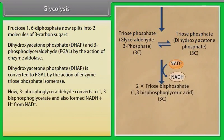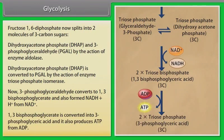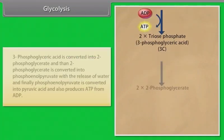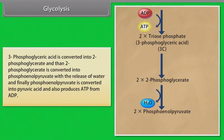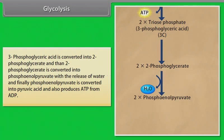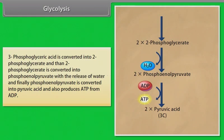3-phosphoglyceraldehyde converts to 1,3-bisphosphoglycerate and also forms NADH+H⁺ from NAD⁺. 1,3-bisphosphoglycerate is converted into 3-phosphoglyceric acid, producing ATP from ADP. 3-phosphoglyceric acid is converted into 2-phosphoglycerate, then into phosphoenolpyruvate with the release of water, and finally phosphoenolpyruvate is converted into pyruvic acid, also producing ATP from ADP.